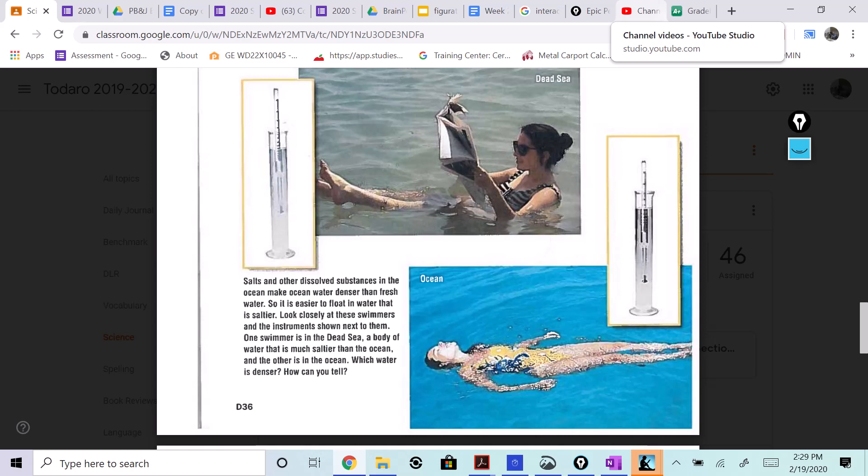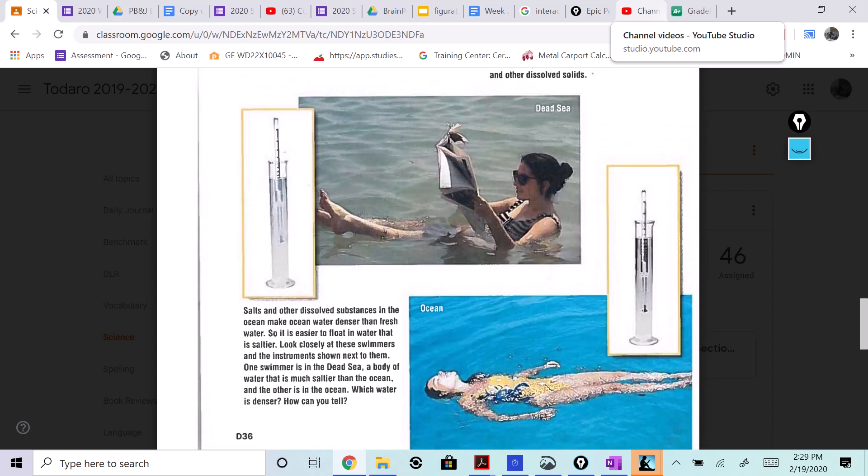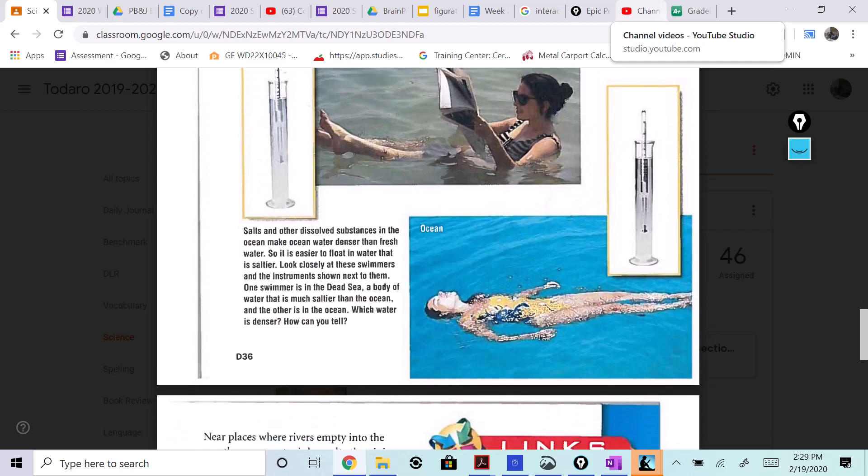Which water is denser and how can you tell? Look, she's floating in that water in the Dead Sea with no flotation. She's just floating there reading the paper. The other one in the ocean, she's got to do a full-on backstroke just to float.